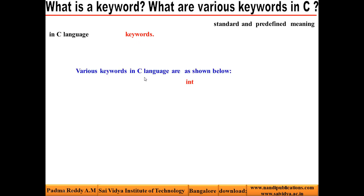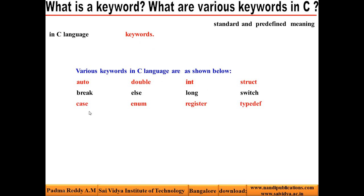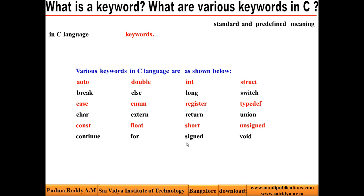Various keywords available in C language are shown below: auto, double, int, struct, break, else, long, switch, case, enum, register, typedef, char, extern, return, union, const, float, short, unsigned, continue, for, signed, void, default, goto, sizeof, volatile, do, if, static, and while. If you observe, there are totally 32 keywords.